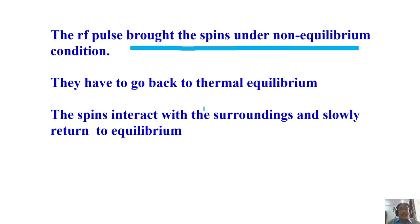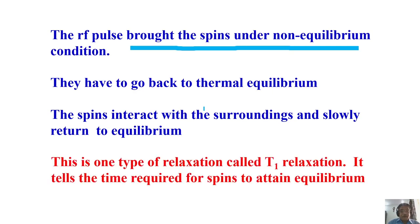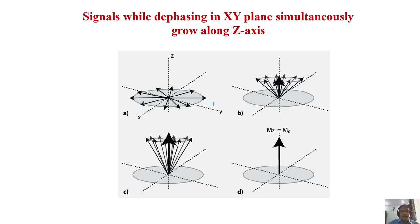The surroundings in this case is the lattice. That is why T1 is also called spin-lattice relaxation. The spins slowly return to thermal equilibrium, and after a time constant T1 they recover back to the original magnetization.